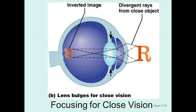Light from close objects diverges as it approaches the eyes, so close vision demands that the eye make active adjustments. To restore focus, three processes must occur simultaneously: first, accommodation of the lenses, which increases the refractive power of the lens; second, constriction of the pupils, where the sphincter pupillae muscles of the iris reduce the size of the pupil toward 2 mm to enhance accommodation; and third, convergence of the eyeballs, controlled by somatic motor fibers of the oculomotor nerves, medially rotating the eyeballs via the medial rectus muscles so that each eye is directed toward the object being viewed.